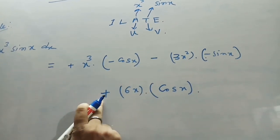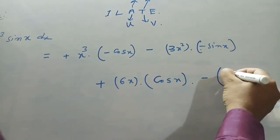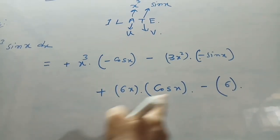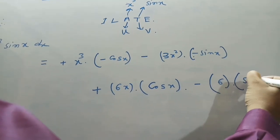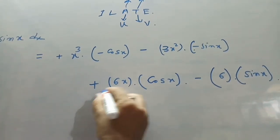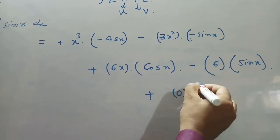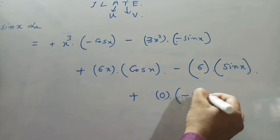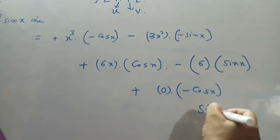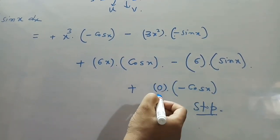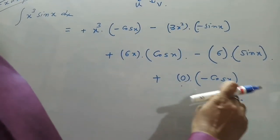Next step is minus: derivative of 6x is 6, and integration of cos(x) is sin(x). Next step: derivative of 6 is 0, and integration of sin(x) is −cos(x). Here, successive integration stops because the derivative of 6 is 0 — the total value becomes 0 — so we do not continue further.